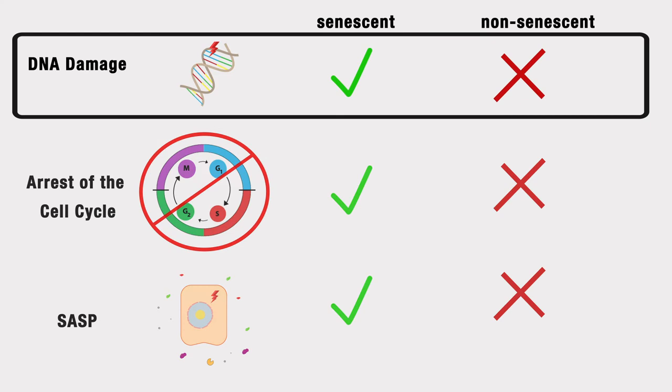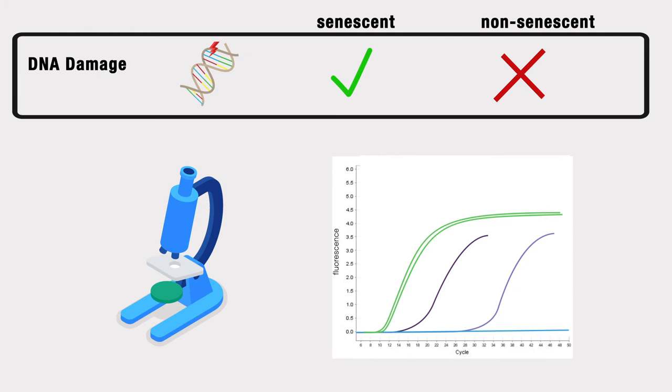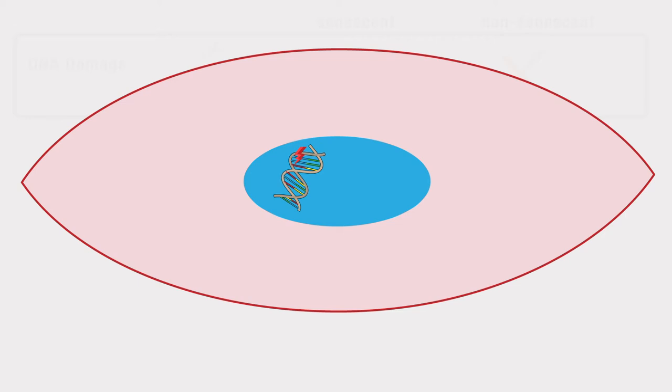To assess the first hallmark of senescence, DNA damage, we can use staining techniques or quantitative real-time PCR, also called qPCR, to look for evidence that the cells have tried to repair their DNA after exposure to doxorubicin. Cells rely on specific proteins to repair breaks or mutations in DNA. So, we can look for proteins like gamma-H2AX, HMGB1, and other proteins involved in DNA repair. It can also be helpful to look for changes in the localization of these proteins. For example, HMGB1 is typically found in the nucleus of healthy cells, but in senescent cells, this protein can be seen in the cytoplasm as well as the nucleus.